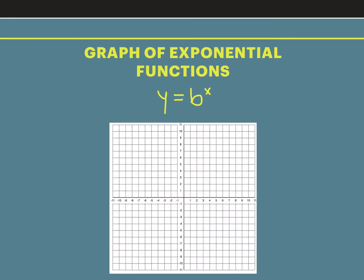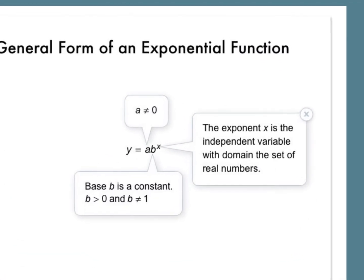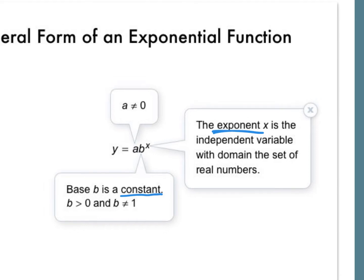So today we're going to be graphing exponential functions. Exponential functions is when that x is in the exponent. Our exponential graph always has this shape — it starts really, really small and then gets really big really quickly, or it does the opposite, where it starts really big and then gets really small. So it always has one of these two shapes. B is our base and it's always going to be a constant — like two, three, four, or one half. X is our exponent, and that's what gives our graph the exponential shape.